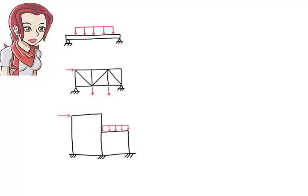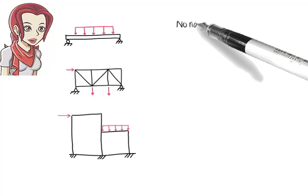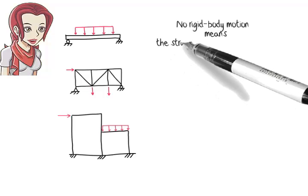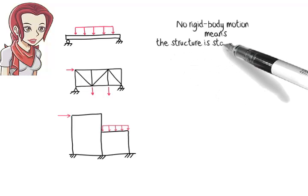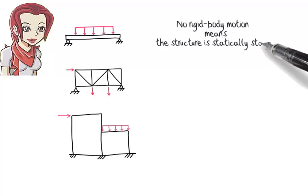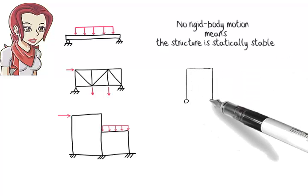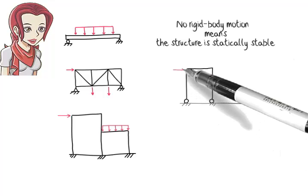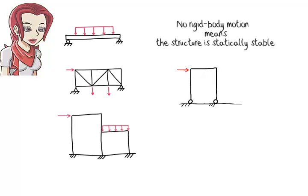Such a system is said to be externally stable if it does not undergo any rigid body motion, regardless of the position of the applied loads. Consider a simple frame structure supported by two rollers. If we apply a horizontal load to the frame, it starts rolling horizontally on the support surface. The structure undergoes rigid body motion. Therefore, the frame is said to be externally unstable.